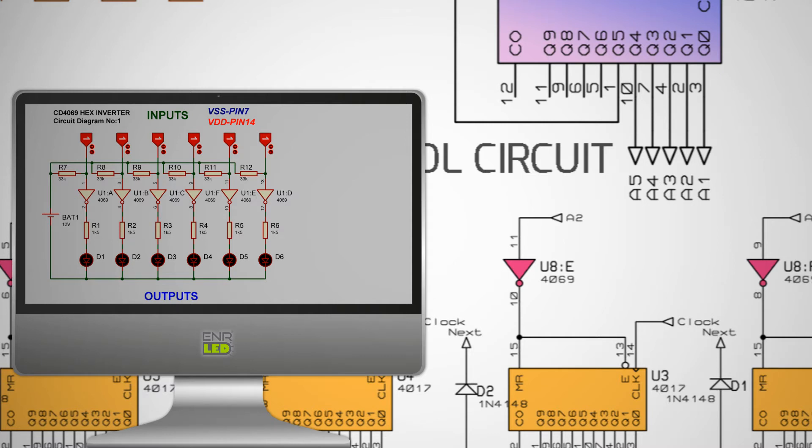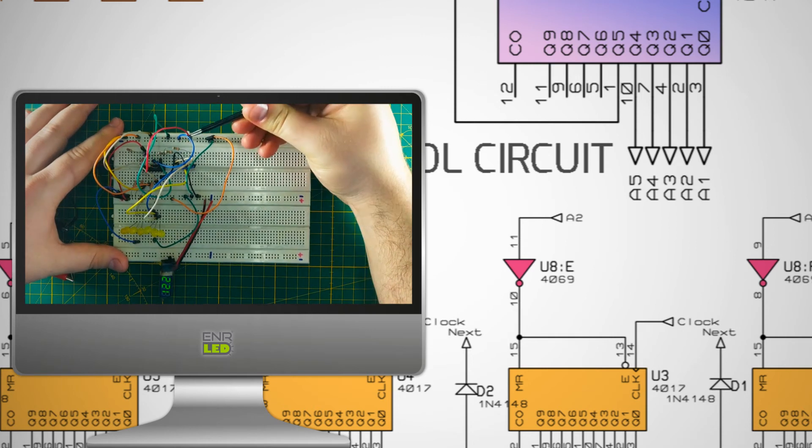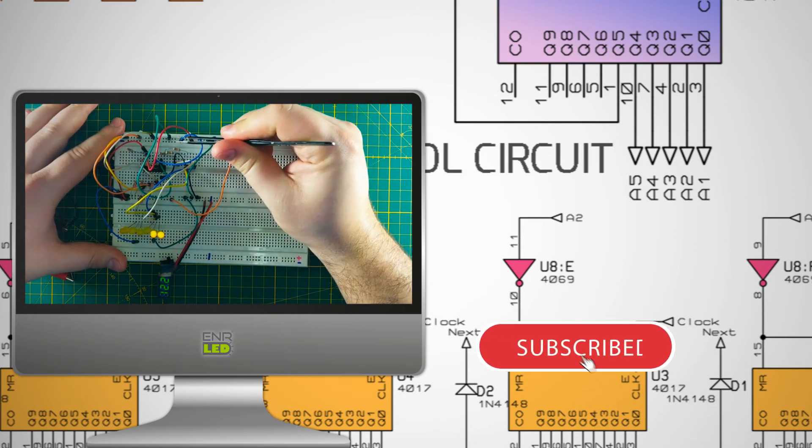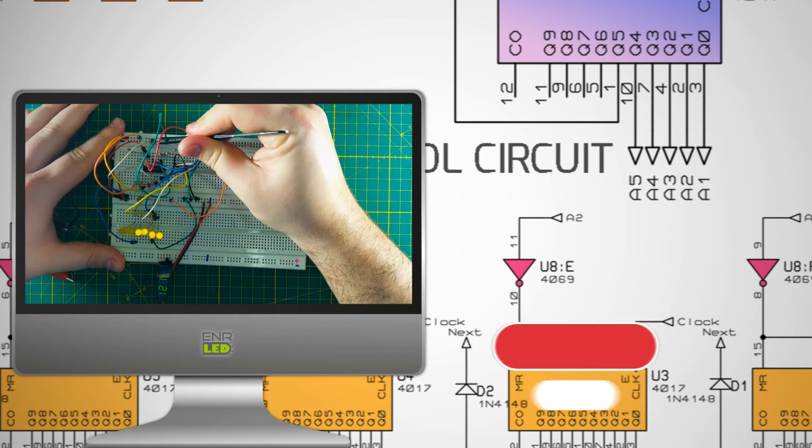As seen in the circuit diagram, 4069 IC has 6 inverters. I set all the input sections to logic 1 and pull up with 33 kilo ohm resistor. Each input has a separate output. I connected the outputs with a 1.5 kilo ohm current limiting resistor to the anode terminal of the LED. I connected the cathode terminal of the LEDs to the negative terminal of the battery. Let's run our circuit on the breadboard. Yes, as you can imagine, none of the LEDs light up because the logic 1 applied to the input is inverted as logic 0 at the output. The LED did not light when logic 0 levels are applied to the anode of the LED.